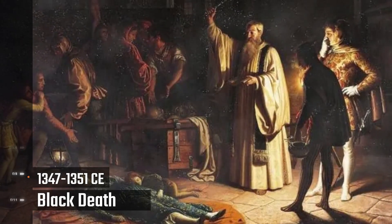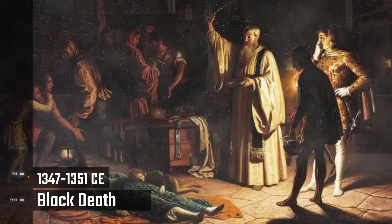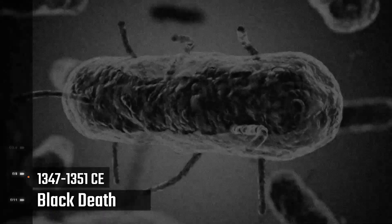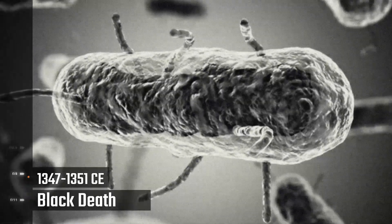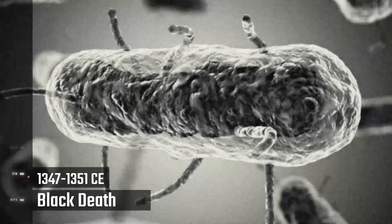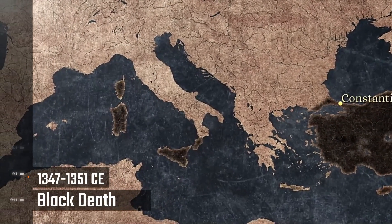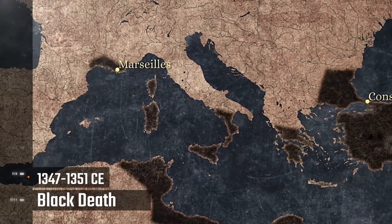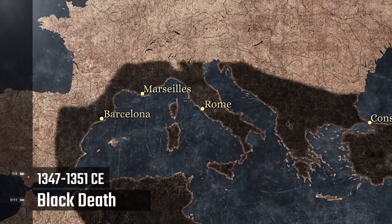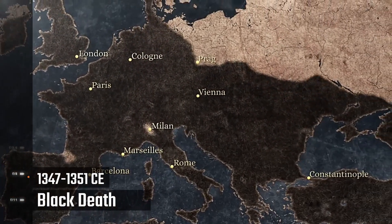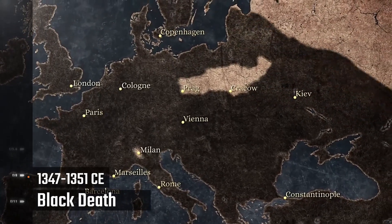Black Death, 1347 to 1351. Who hasn't heard about the Black Death of the 14th century? The magnitude of this disaster was such that almost everyone in the world knows about it even today. The Black Death was an epidemic of bubonic plague caused by the bacterium Yersinia pestis, which circulates among wild rodents and fleas. Estimates suggest 50 to 60 percent of Europe's population died — even higher than the often-cited one-third — and figures suggest it claimed more than 200 million lives.